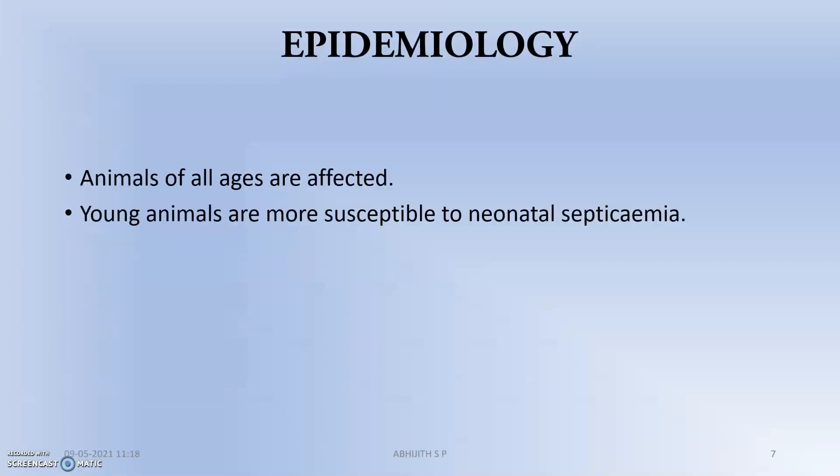Moving to the epidemiology of septicemia: animals of all ages are affected. Young animals are more susceptible to neonatal septicemia because their immune system is very fragile and they are still familiarizing themselves with the environment. They cannot mount an effective response to the body's imperfections, so the chance of death in neonatal septicemia is very high.